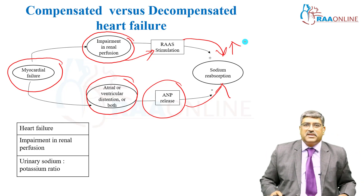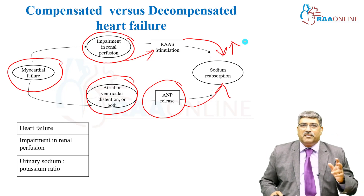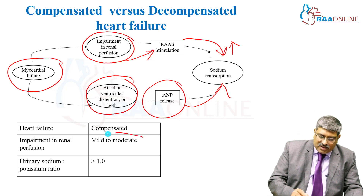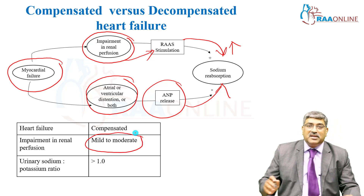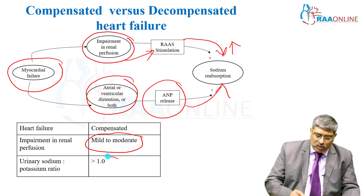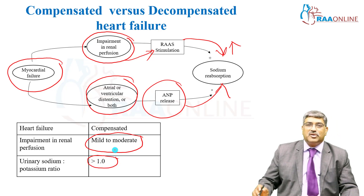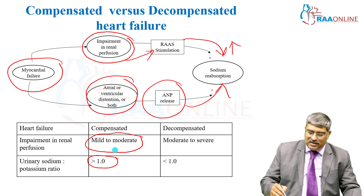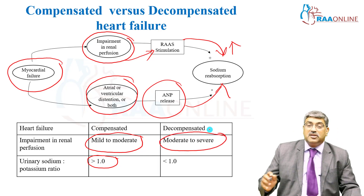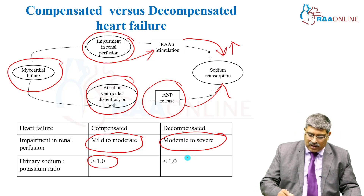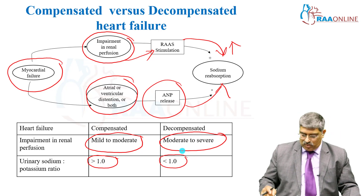To differentiate compensated from decompensated heart failure: in compensated heart failure, renal impairment is mild to moderate and the urine sodium-to-potassium ratio is greater than one. In decompensated heart failure, there is moderate to severe reduction in renal perfusion and the urine sodium-to-potassium ratio is less than one.